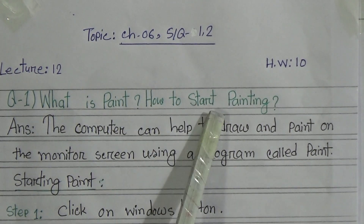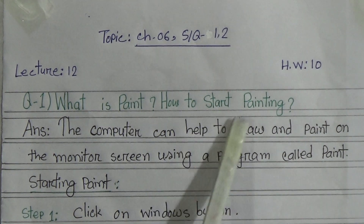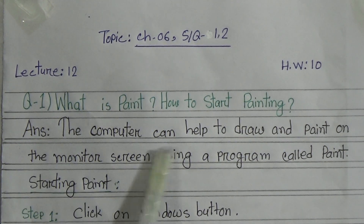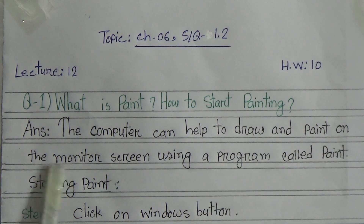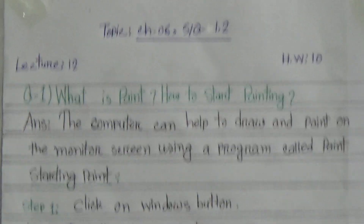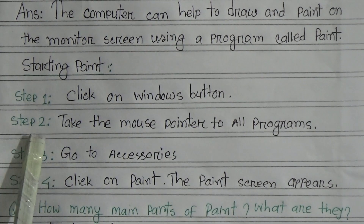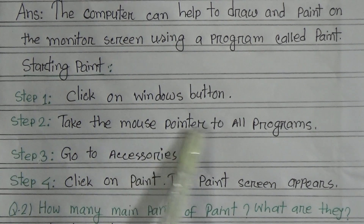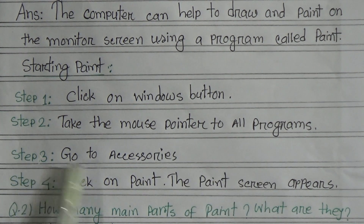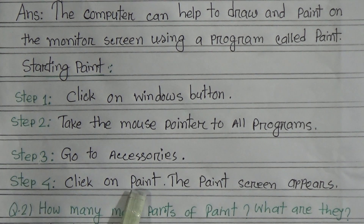What is Paint? How to start Paint in computer? Answer: The computer can help to draw and paint on the monitor screen using a program called Paint. Starting Paint — Step 1: click on the Windows button. Step 2: take the mouse pointer to All Programs. Step 3: go to Accessories. Step 4: click on Paint. The Paint screen appears.